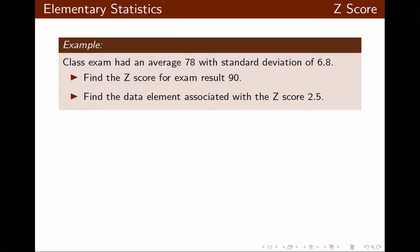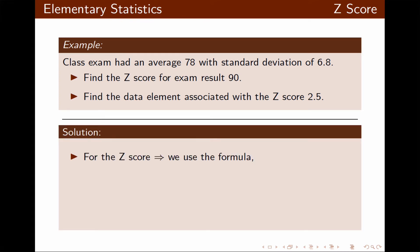To find the z-score, we use the formula. In place of x, we plug in 90. x-bar is 78, and s, the standard deviation, is given to be 6.8. We do the calculation and we round the answer to three decimal places as it was recommended.